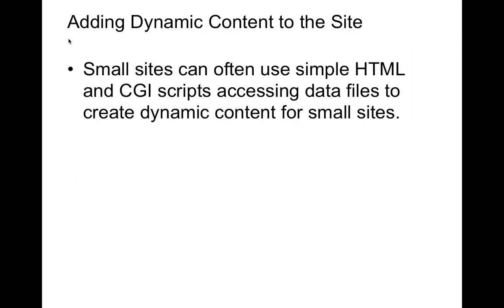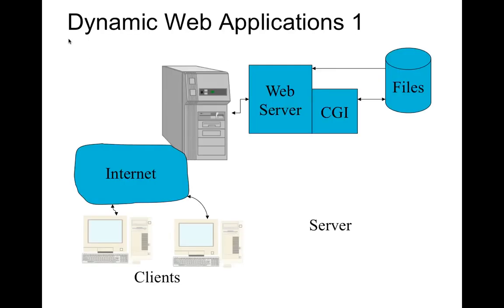In order to add dynamic content to the website, we can use a CGI script to access data files and create dynamic content. We introduced CGI scripts in the previous class, so I will not go into more detail here. Back to the architecture: the client sends a request to the web server from the internet. On the server side, the CGI scripts are executed, they access data from files, generate the content, and then send a response.